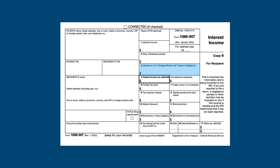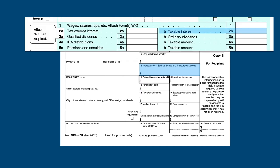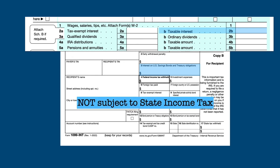Box 3 lists any interest from U.S. savings bonds and Treasury obligations — interest paid by the federal government on its debts. This amount is not included in Box 1 and therefore must be added to any amount already included on line 2B of the 1040. It's important to know this amount because interest on federal obligations is not subject to state income tax.